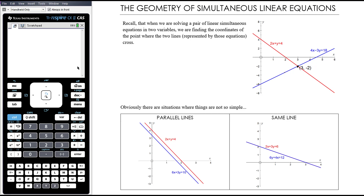Graphically, that point represents where those two equations cross. So most commonly when we are solving two simultaneous linear equations with two variables, we get a solution — an x value and a y value — that graphically represents the coordinates of the point where those two lines cross.